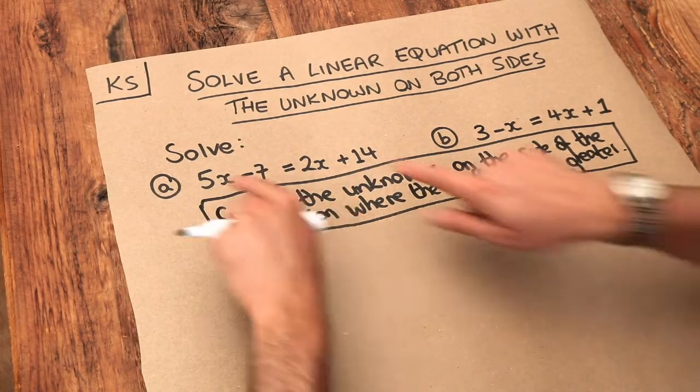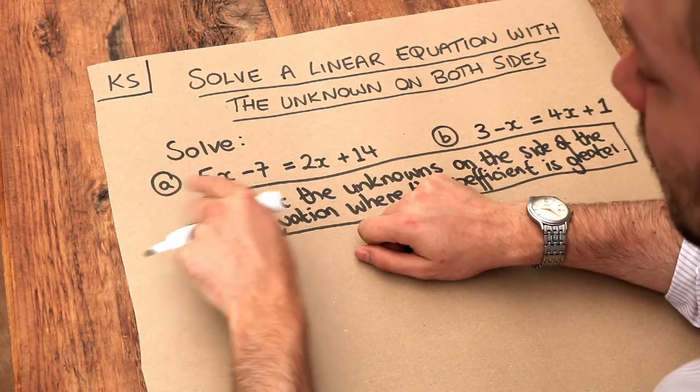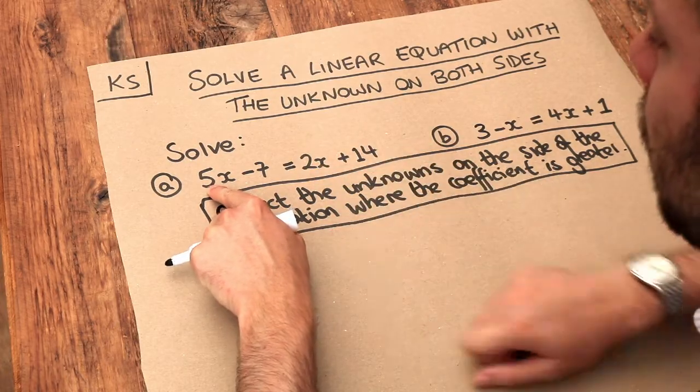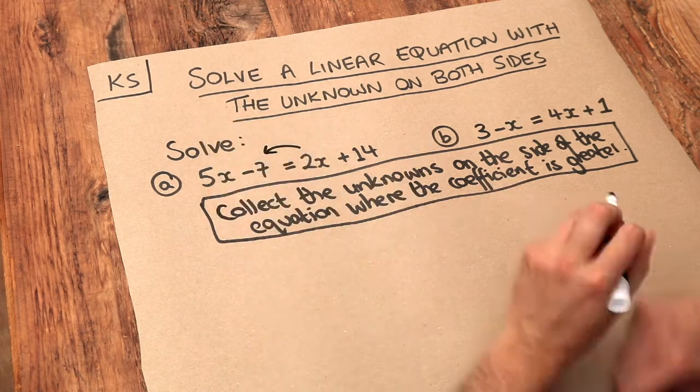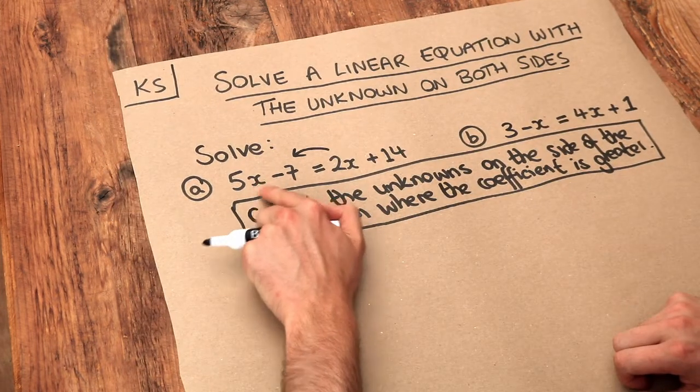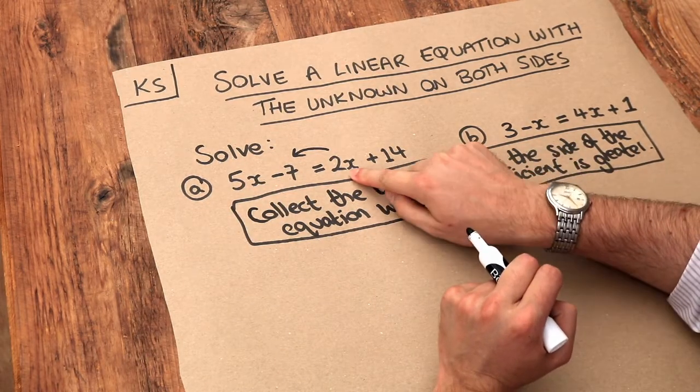So we therefore want to collect the X terms on the side of the equation where we have more X's, that is where the number on the front is bigger. Now 5 is bigger than 2, so therefore we want to collect the X's on the left side of the equation. So let's do that. We want to get all the X's on the left-hand side of the equation because we've got more X's here. So therefore we need to get rid of that 2X.